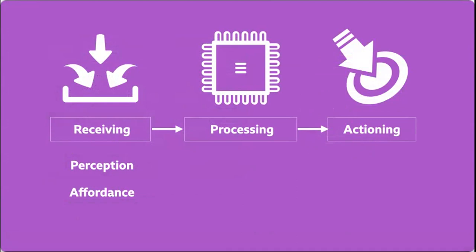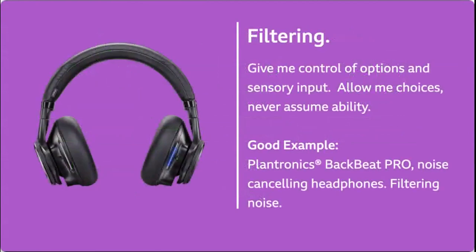That is receiving information. The question of how do I receive information, how do I perceive information, and how do I work out what the affordances are? Now if I'm working through something, I've got a big long list in my head of all the things I could possibly do. But I need to do something with that list. The list of knowing what a website is able to do isn't the same as actually being able to use it to do that thing. So I need to go through a process of filtering and deciding. Filtering is about giving me control of options and sensory input, allowing me choices and never assuming ability.